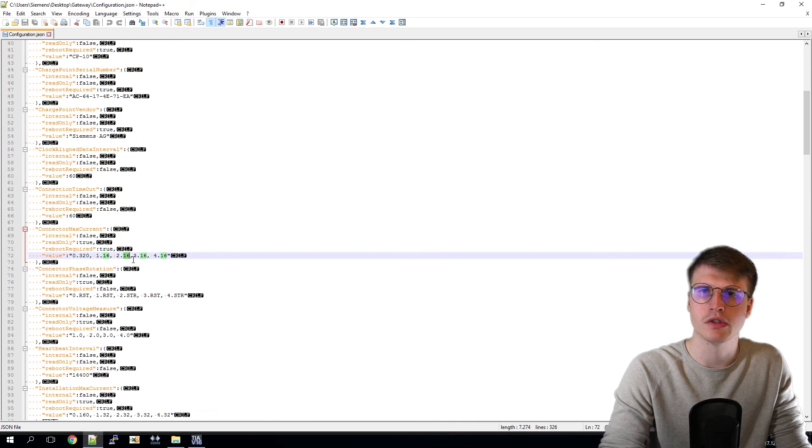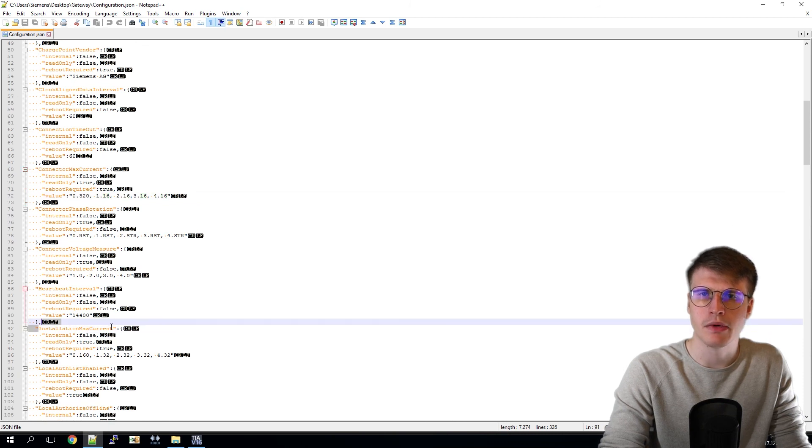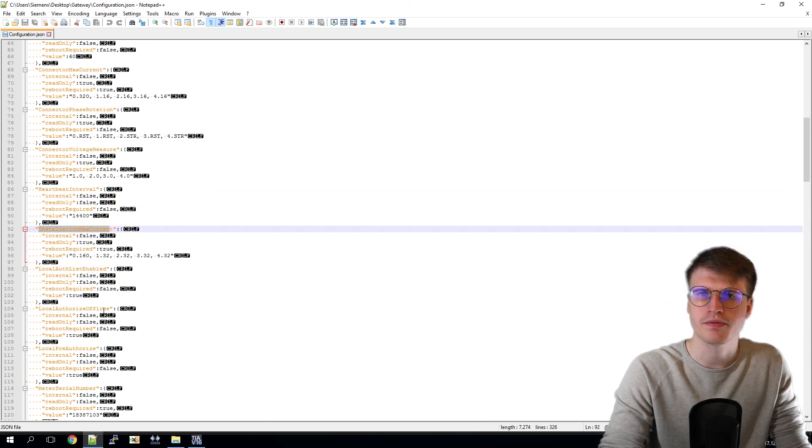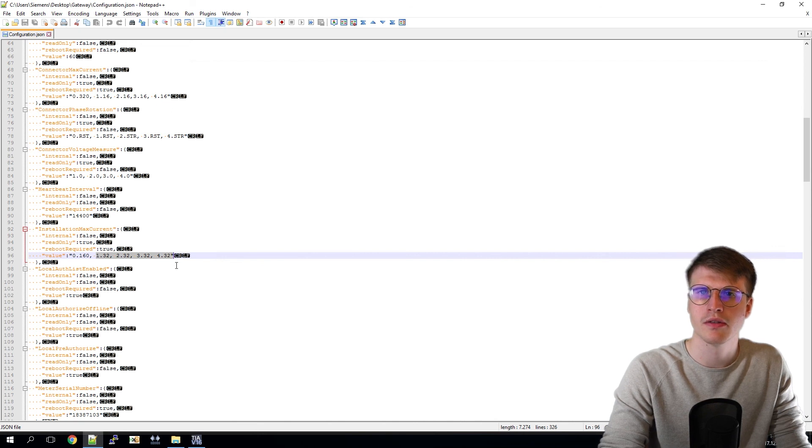The second important value is the installation max current. Again, the value is divided once for the station and once for the connectors. This was the important values for our load management.